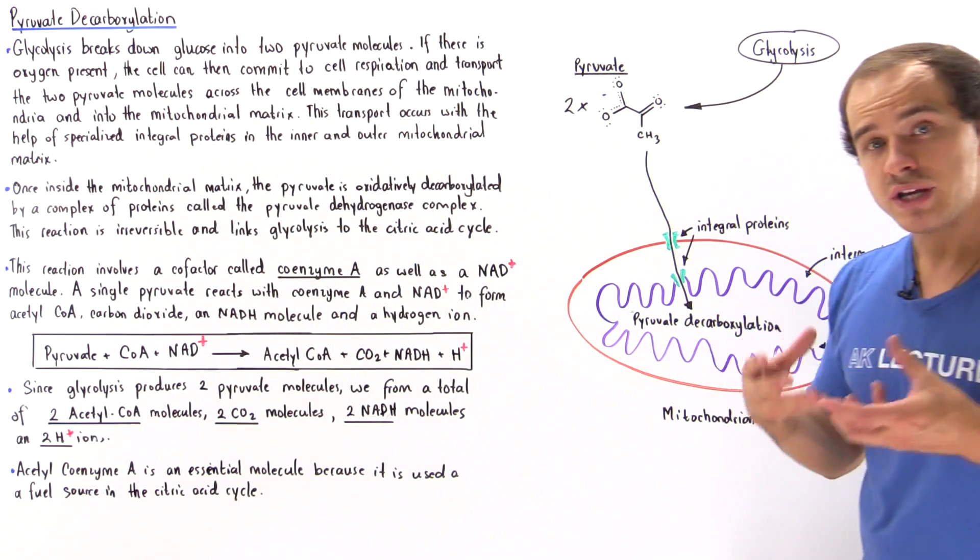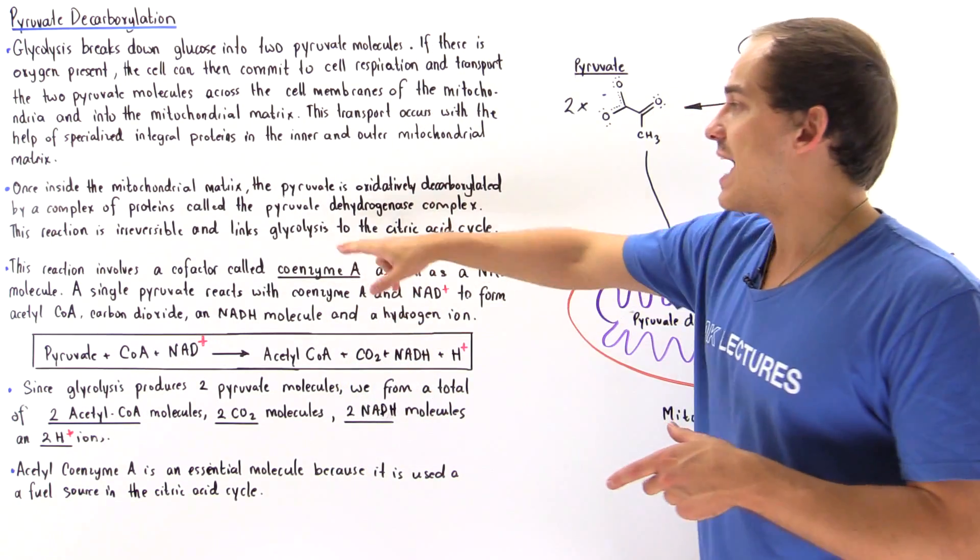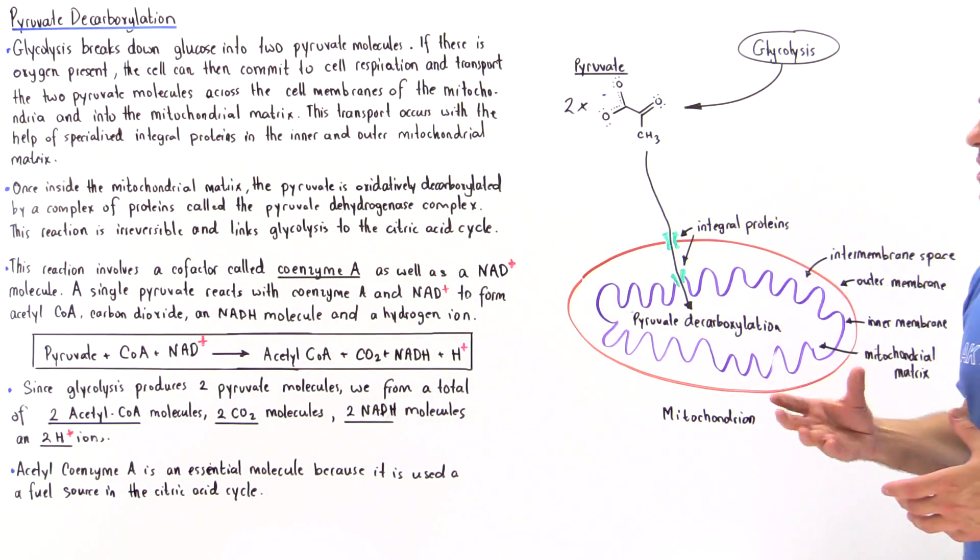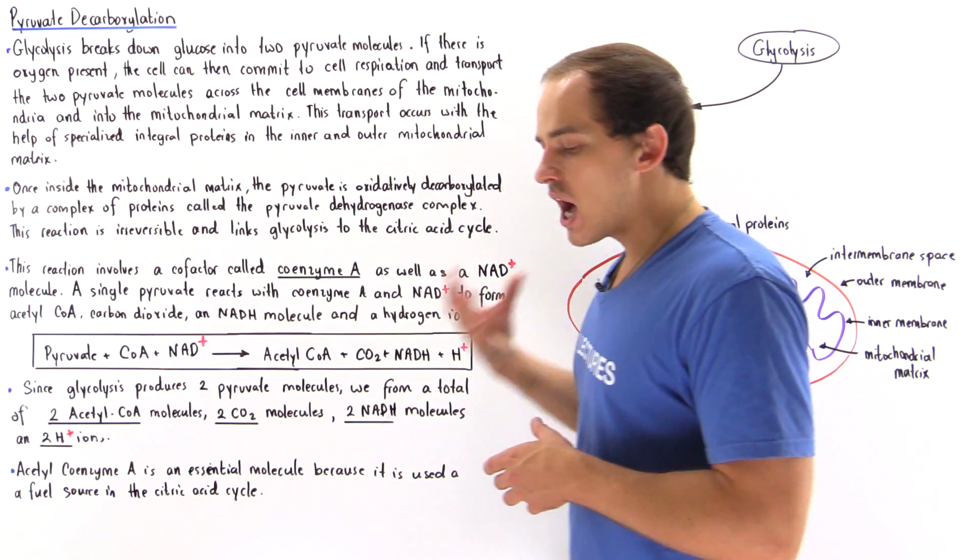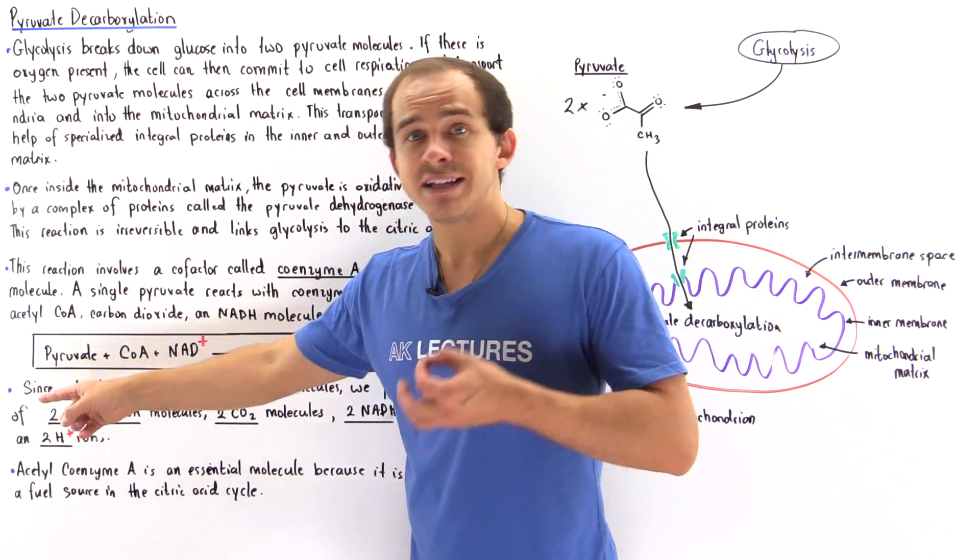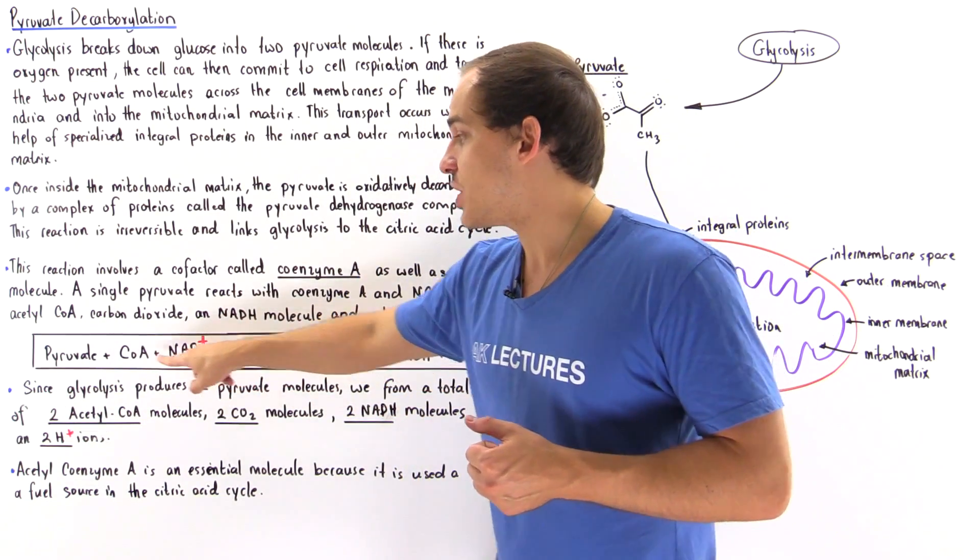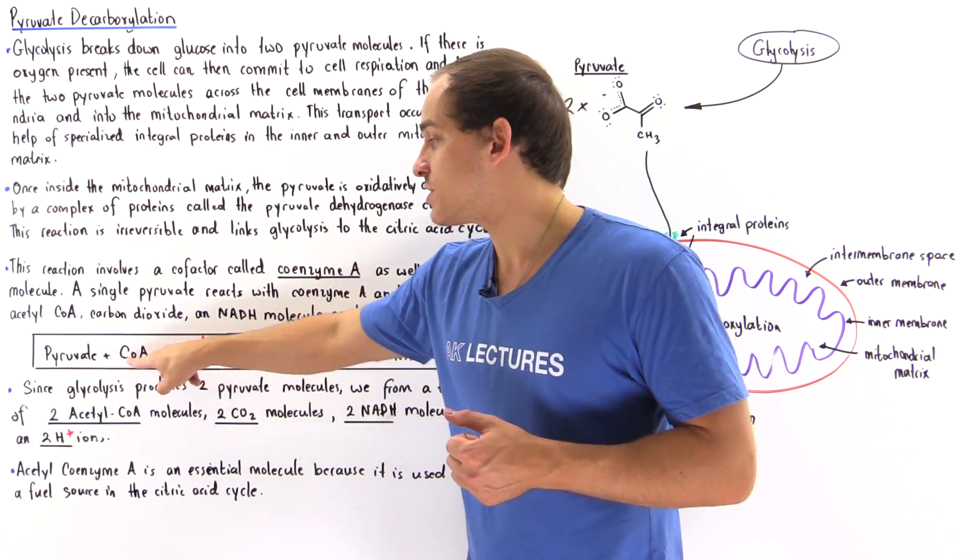Three enzymes join together to form an enzyme complex known as pyruvate dehydrogenase complex, and what this complex does is it takes the pyruvate and uses two cofactors: one NAD+ and one coenzyme A, or simply CoA.